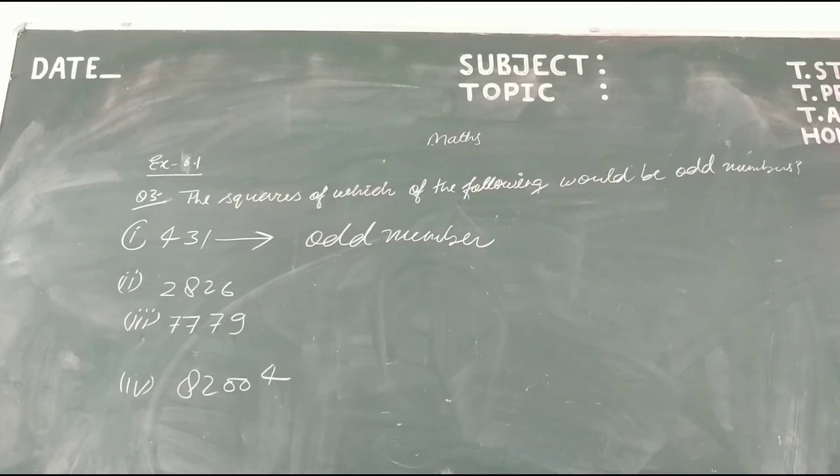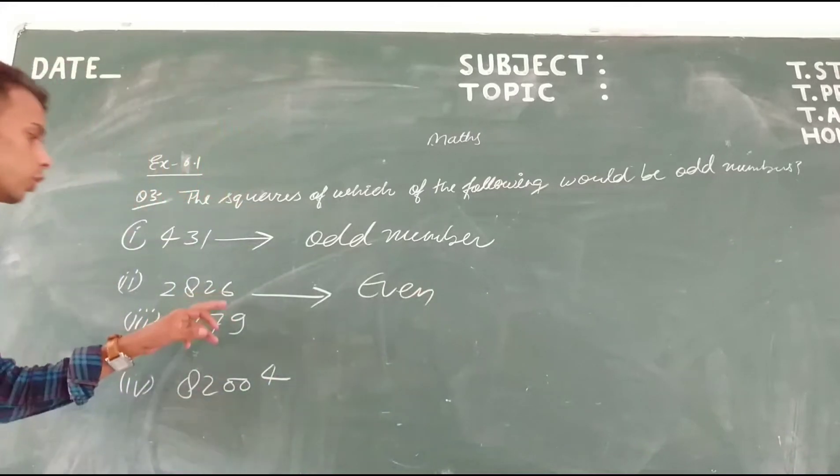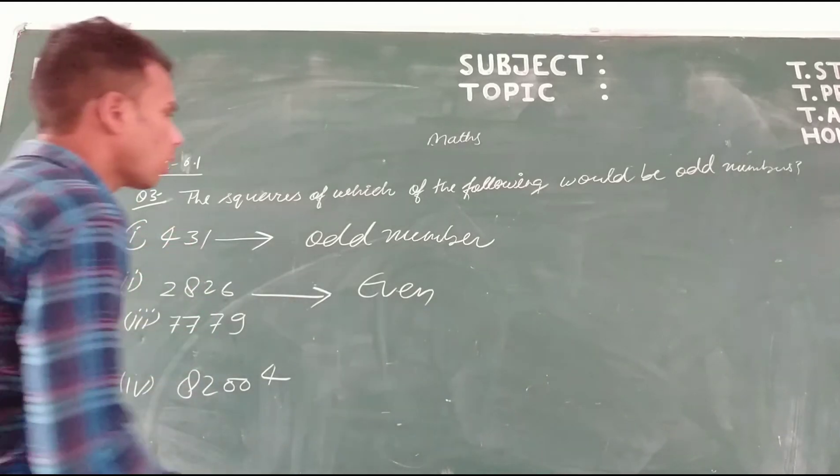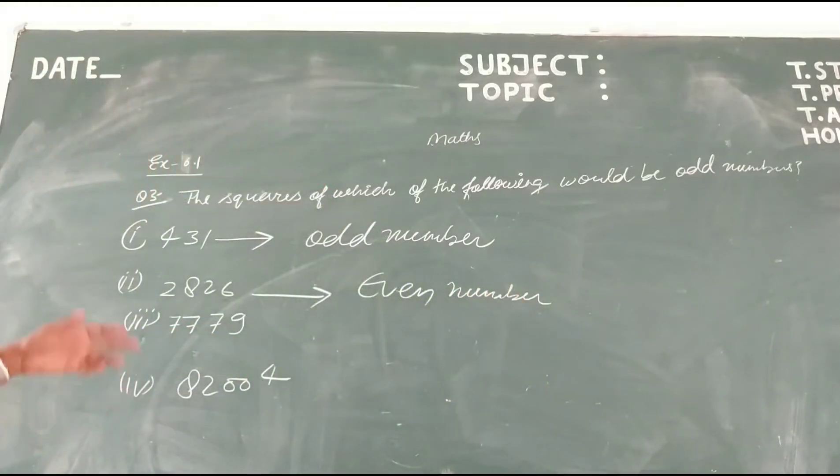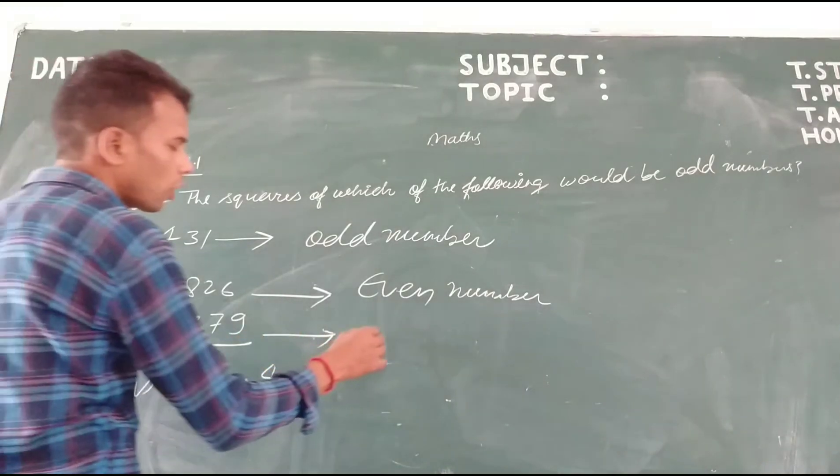2,826: the square of 2,826 is an even number because the unit digit is 6. For the first number, the unit digit is 1, so this number is odd. Now check the third part: this number is an odd number, so the square of odd is odd.